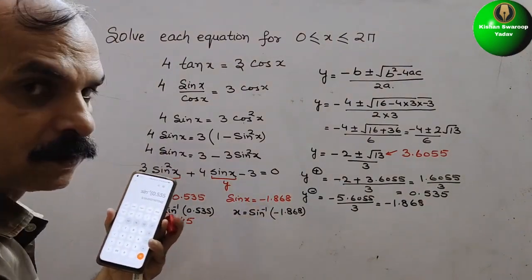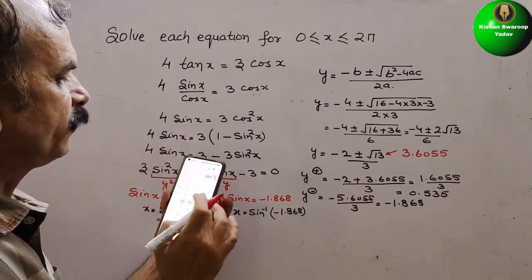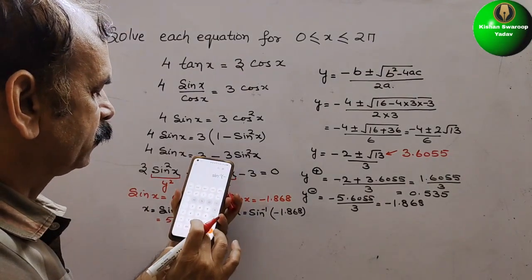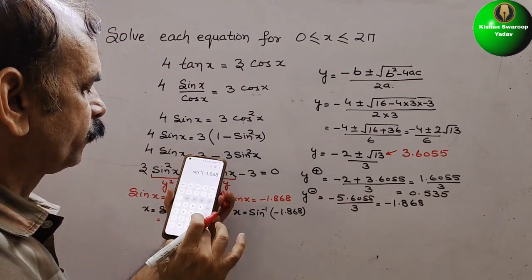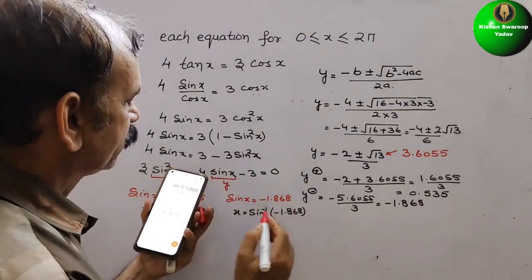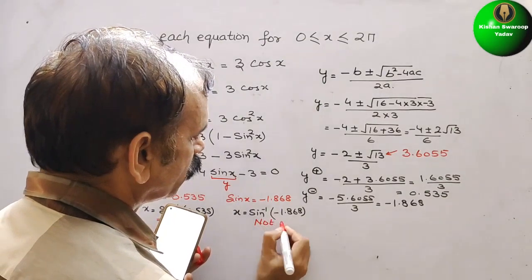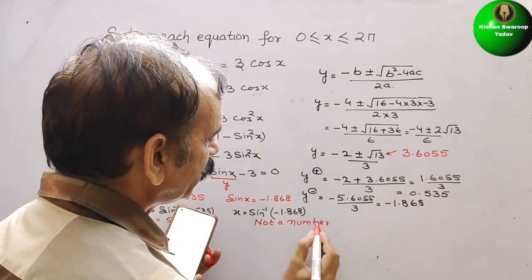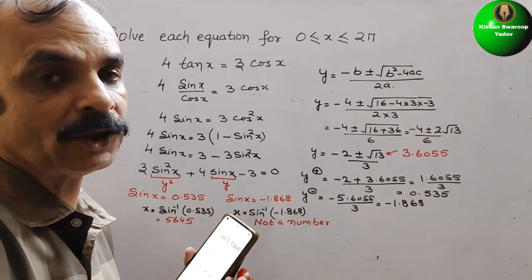Now we will check the second value. Press sin inverse and write −1.868, then press equals. Here they have told this is 'not a number.' That means this does not exist — the negative value does not exist.